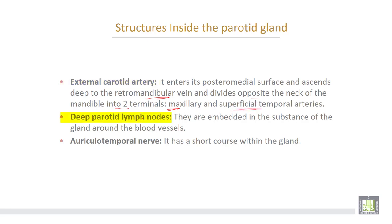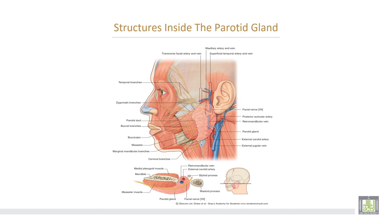The deep parotid lymph nodes are embedded in the substance of the gland around the blood vessels. Lastly, the auriculotemporal nerve has a short course within the gland. From superficial to deep, the structures inside the gland are: the facial nerve, then the retromandibular vein, and the deepest structure is the external carotid artery.